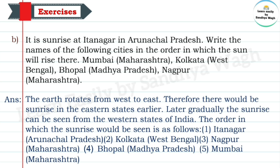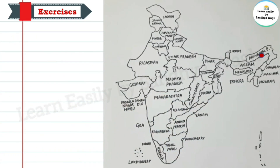The Earth rotates from west to east. Therefore, there would be sunrise in the eastern states earlier, and gradually the sunrise can be seen from the western states of India. The order in which sunrise would be seen is as follows: Itanagar (Arunachal Pradesh), Kolkata (West Bengal), Nagpur (Maharashtra), Bhopal (Madhya Pradesh), and Mumbai (Maharashtra).